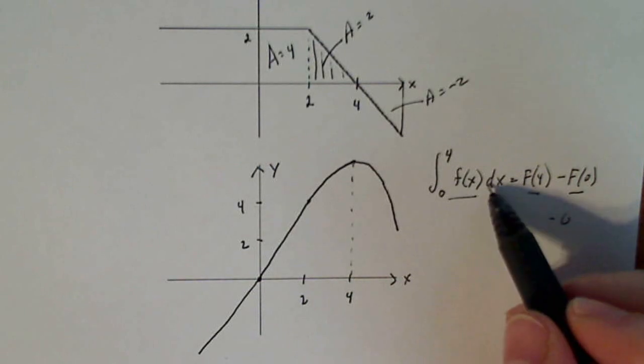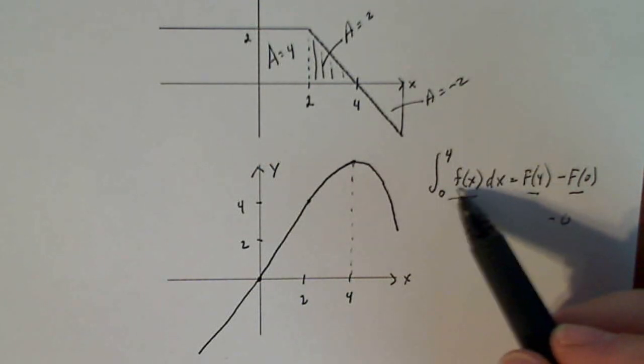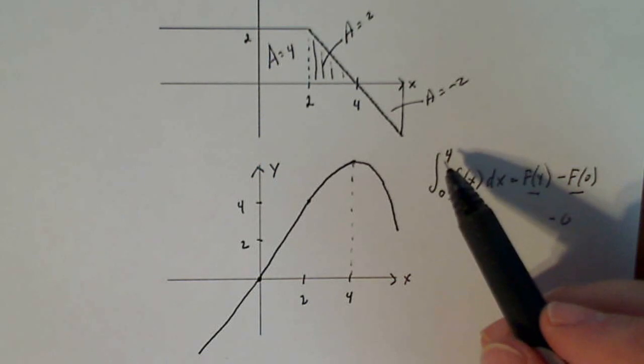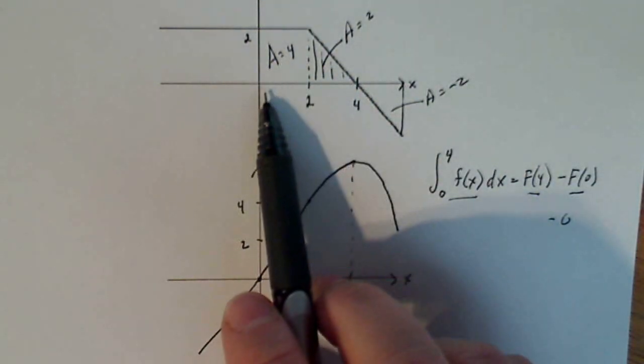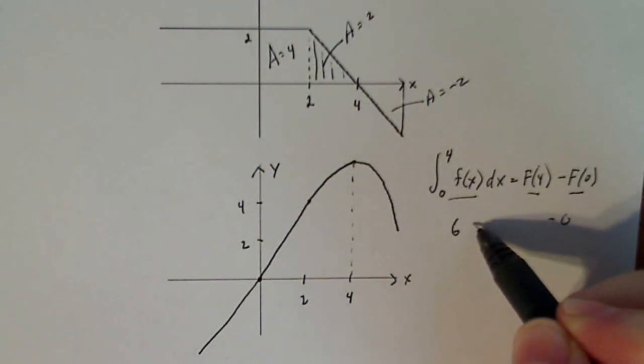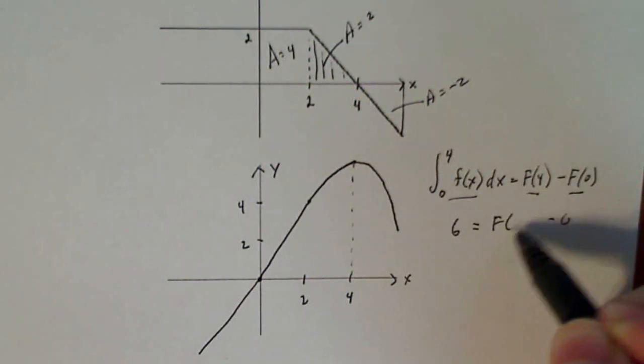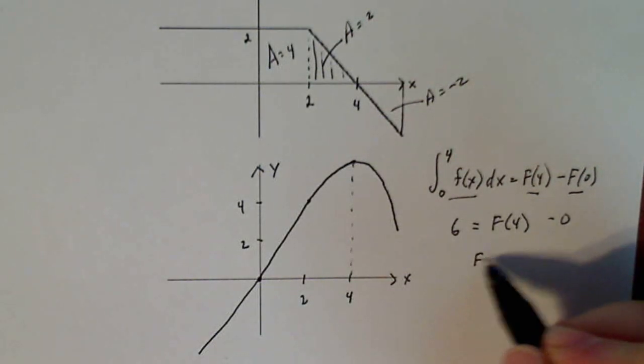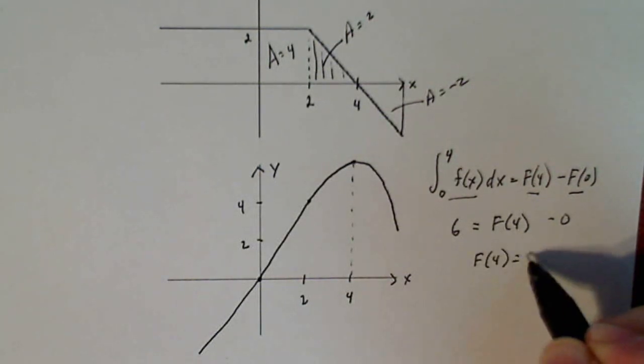And I actually know this one, the area under the curve of f of x dx between the x axis and the curve from zero to four. So from zero to four, that area is four plus two, which is six. So six equals F of four minus zero. So that means that F of four is supposed to be six.